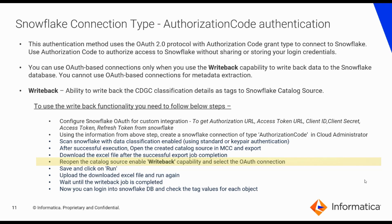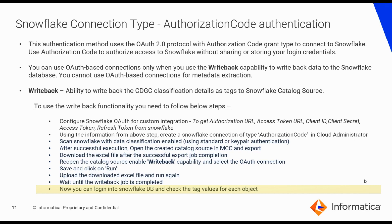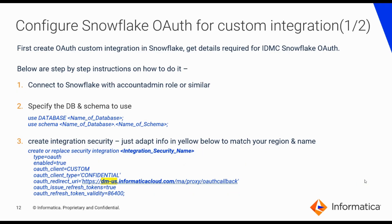Before running writeback, you need to download the classification file. Reopen the resource, enable writeback capability, and select the authorization code connection. To get the authorization URL, access token URL, client ID, client secret, access token, and refresh token from Snowflake, execute a set of SQL commands with an Account Admin or similar role. You can run Use Database and Use Schema commands to set the database and schema where you want to create the security integration. The next step is to create a security integration, which provides the details needed to create the connection in IDMC Administrator.